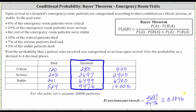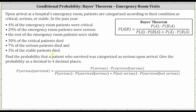Now let's determine the same probability using Bayes' theorem, shown above. For Bayes' theorem, event A is the patient was classified as serious, and event B is the patient survived. Completing Bayes' theorem: the probability the patient was serious given they survived equals the probability of serious times the probability of survived given serious, divided by that same product plus the probability of not serious times the probability of survived given not serious.